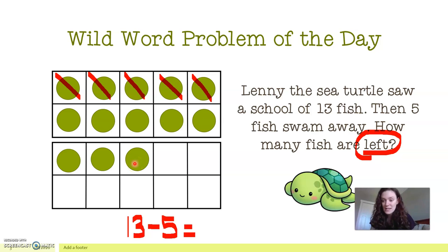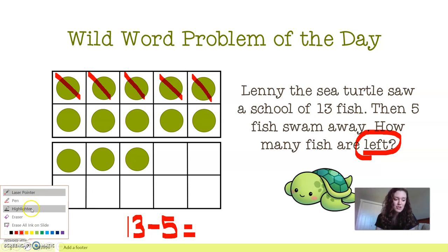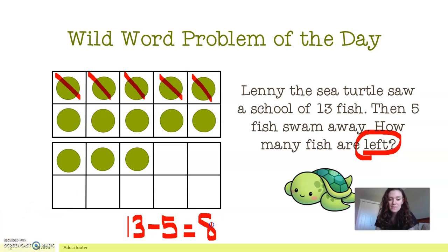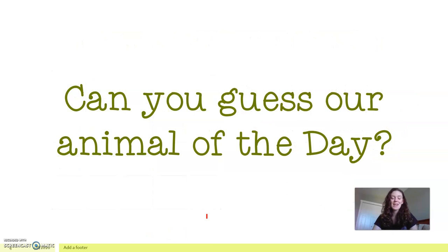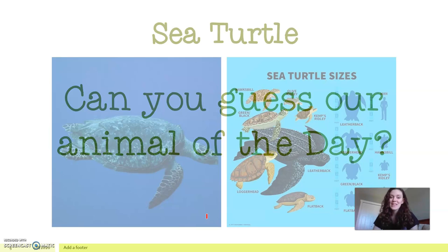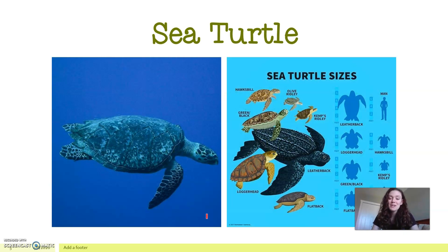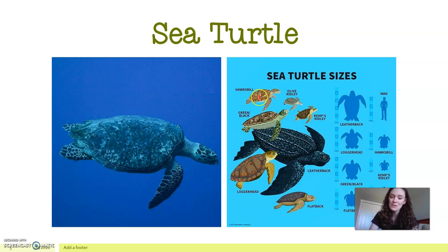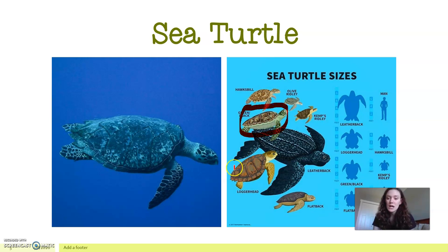So Lenny first saw 13. When five fish swim away, Lenny now only sees eight fish. Great job, my nature explorers. So using our hint from our word problem, can you guess what our animal of the day is? If you guessed sea turtle, you are correct. So we're going to be focusing on these wonderful animals today. I thought this picture was so awesome — it's a chart of a lot of different sea turtles. You may just think there's one type, but there are many types of sea turtles. Today we are going to be focusing on the green or black sea turtle, this friend right here, and we're going to be paying more attention to just his type.